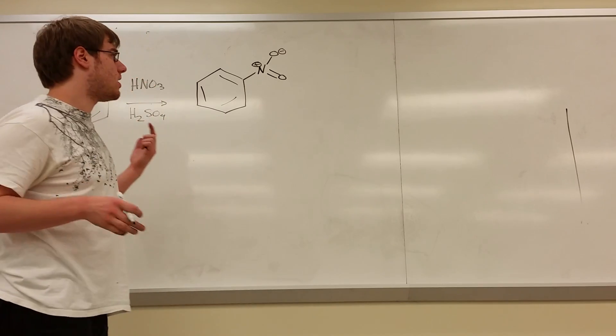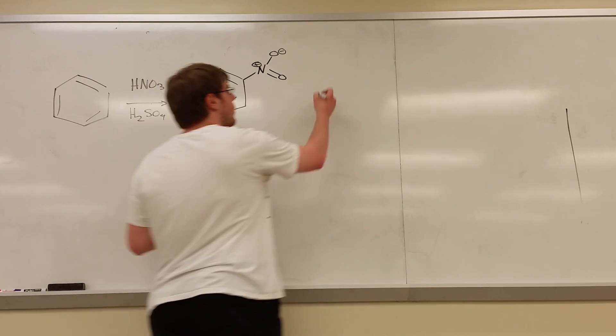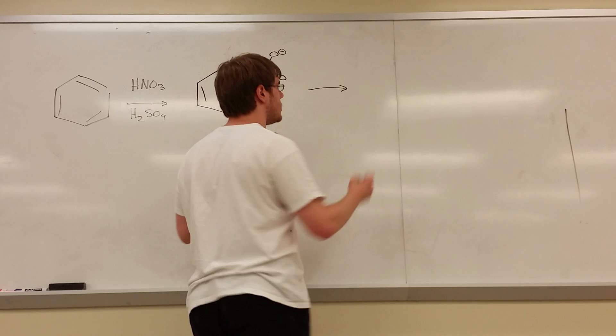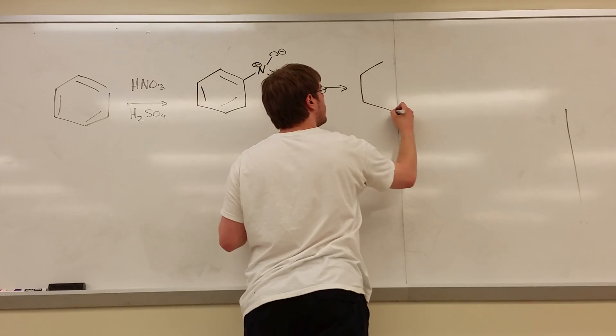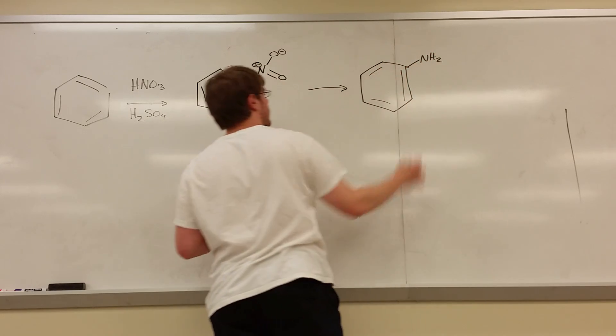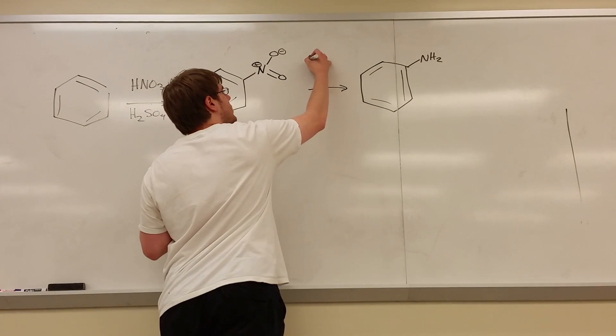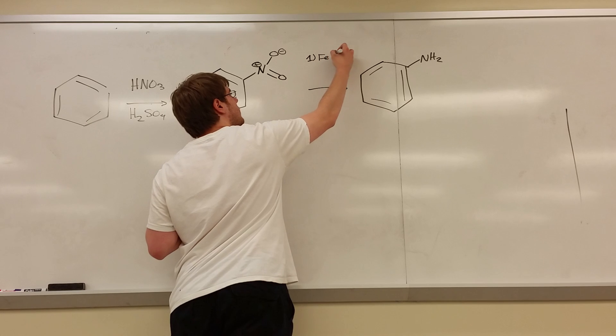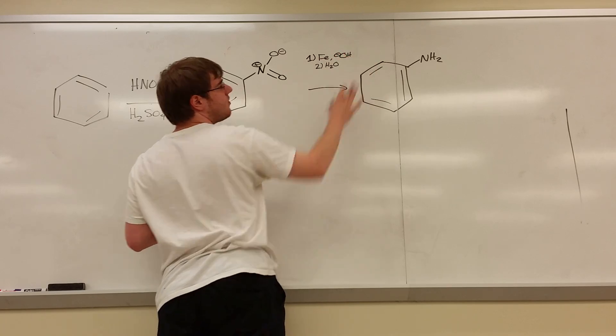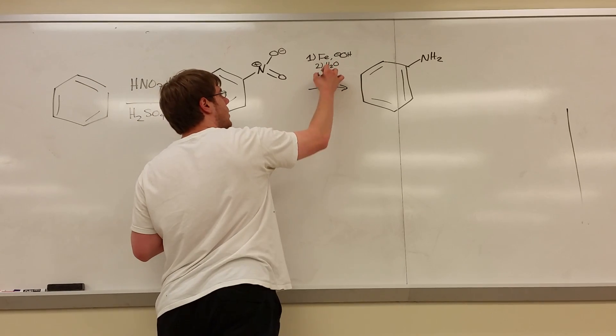Now what are we going to do to that NO2? Because we can actually now have some reactions with it. Well, one thing that will usually happen is we're going to reduce it to NH2. We're going to turn that into an NH2. So we need a reducing agent, and we have quite a number of reactions that can actually do this. So I'm going to list them all out. One reaction you'll see a lot is Fe, OH- step 1, step 2 I believe is water. If you see iron and OH-, you know it's this reaction in the context of NO2.